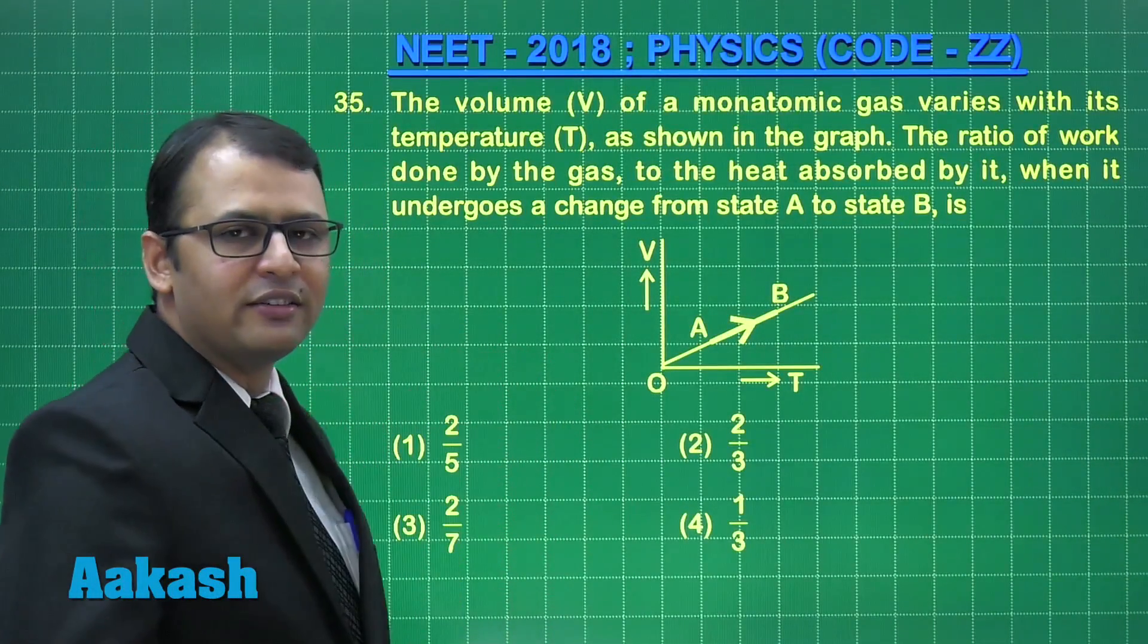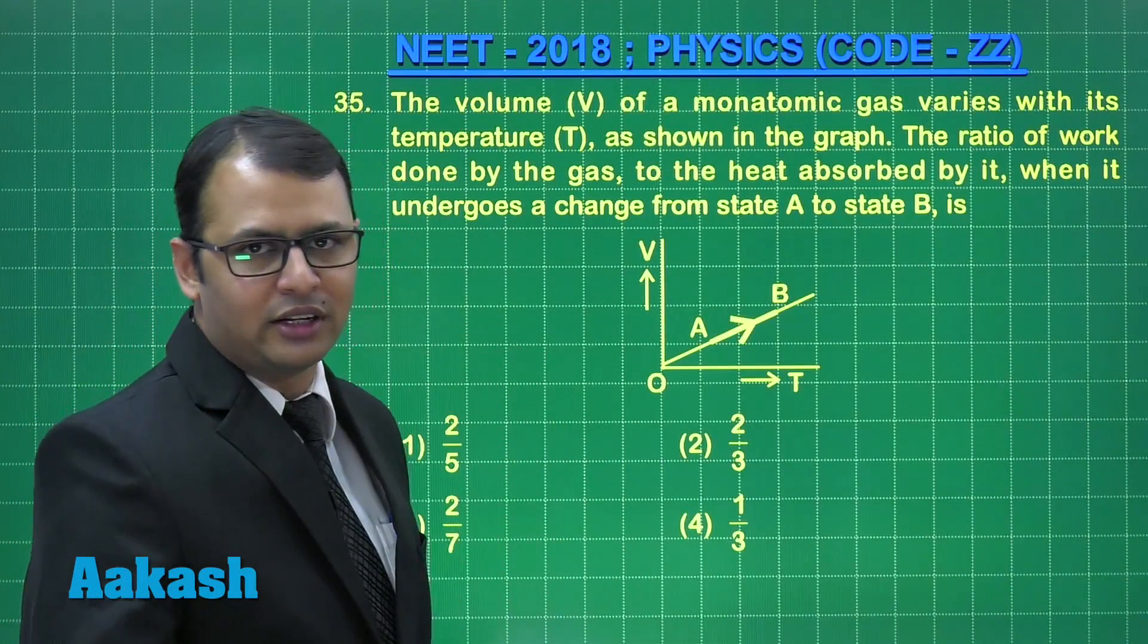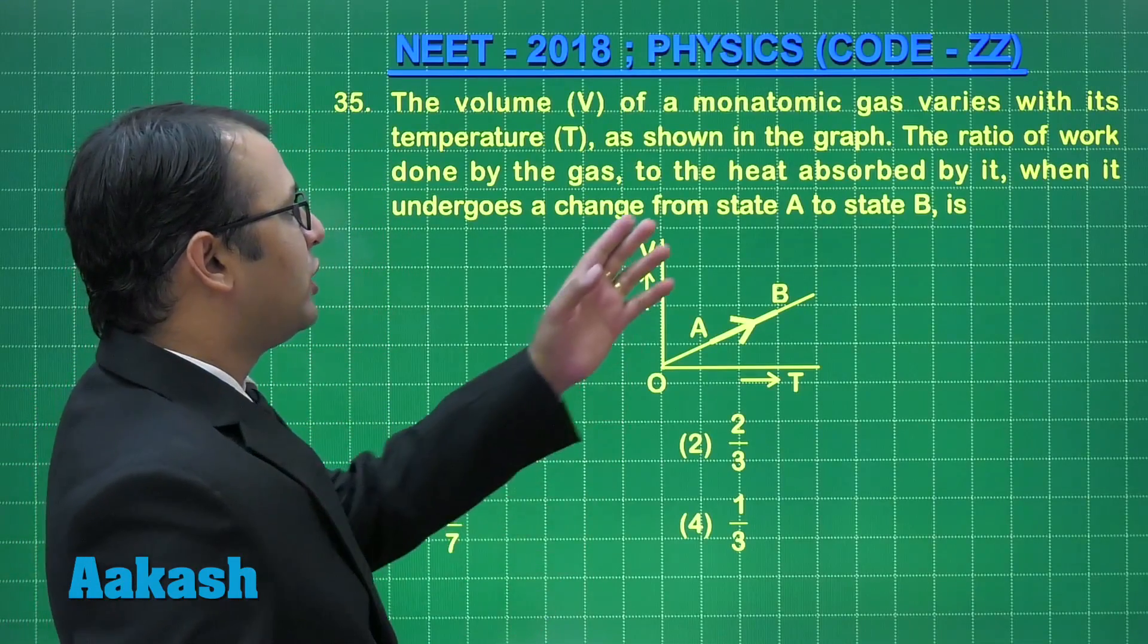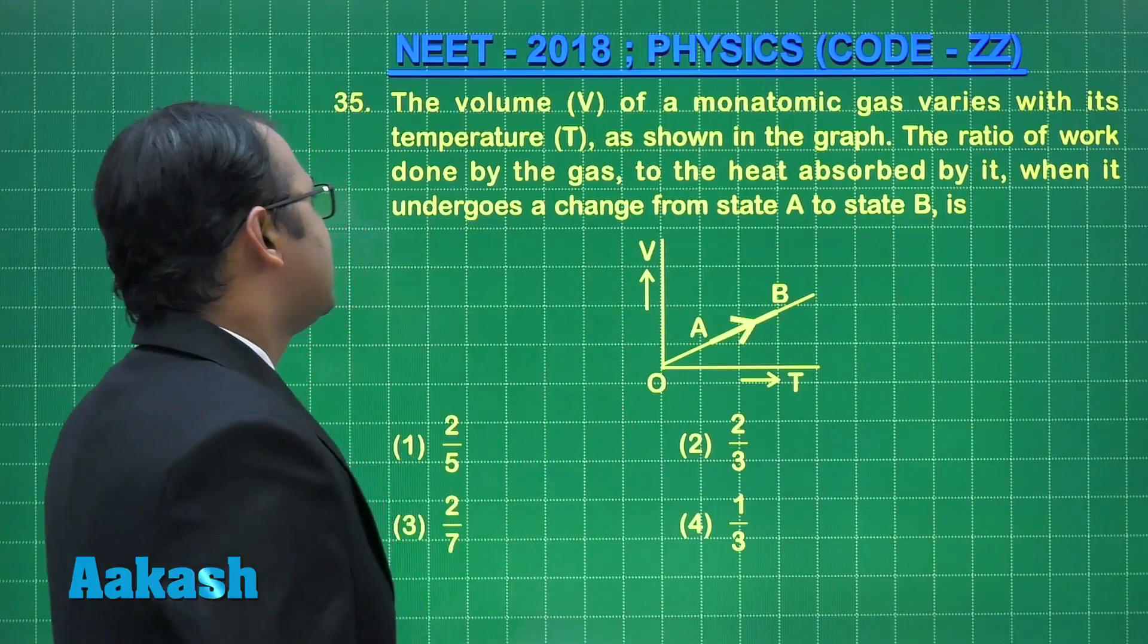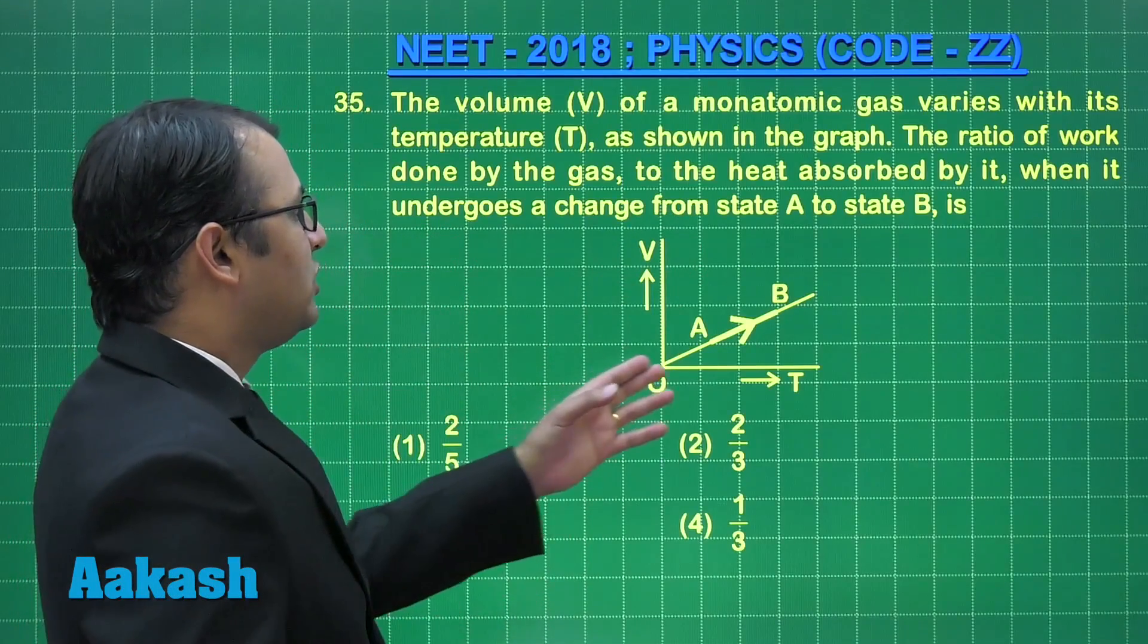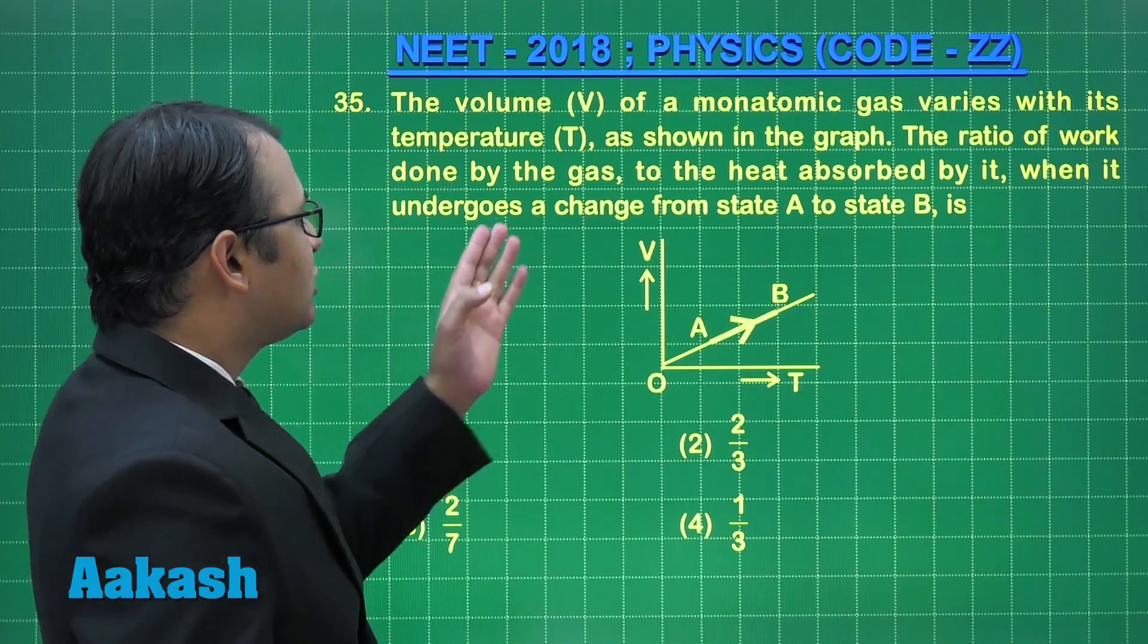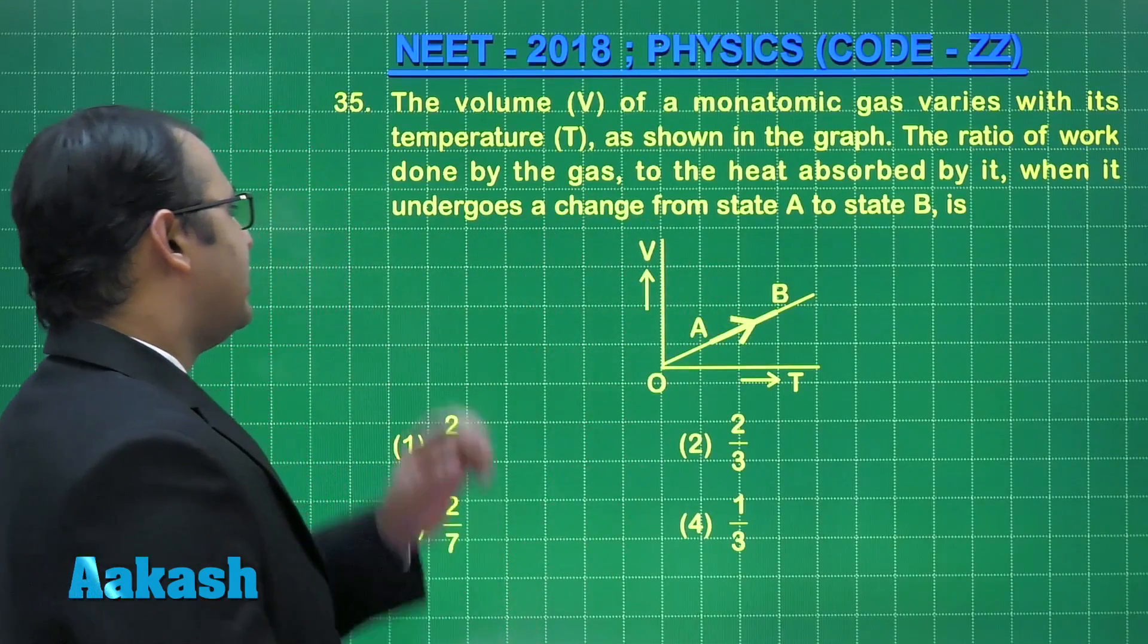Let's start with question number 35. This question belongs to chapter thermodynamics. Let's see what the question says: the volume V of a monatomic gas varies with its temperature T as shown in the graph, so there is a directly proportional relation. The ratio of work done by the gas to the heat absorbed by it when it undergoes